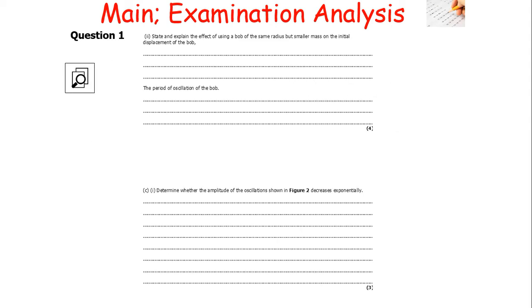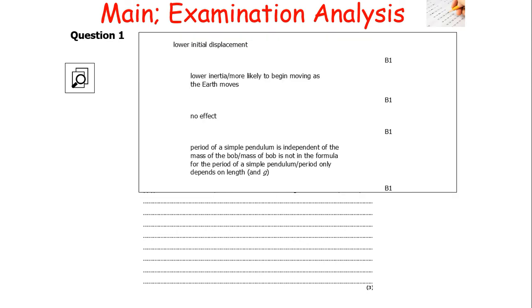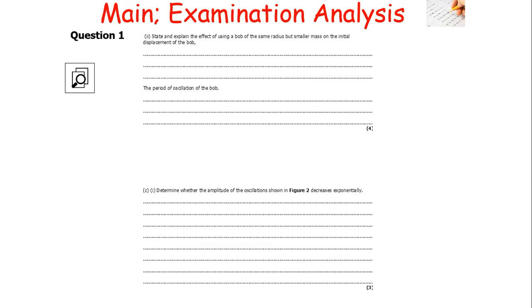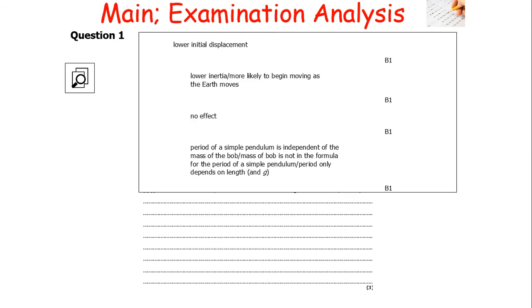The question asks us to state and explain the effect of using a bulb of the same radius but smaller mass on the initial displacement. Two factors affect simple harmonic motion: the restoring force and the inertia. Inertia depends upon mass. With lower mass there is lower inertia, so the bob is more likely to begin moving as the earth moves, resulting in a lower initial displacement. For the time period, since T = 2π√(L/G) does not contain M, the smaller mass has no effect on the time period.